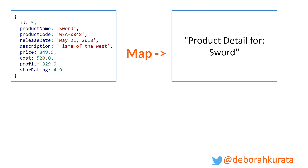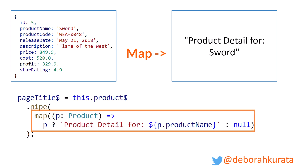One last example of how to use the map. Again, we have our product on the left that we've retrieved and we want to map it to a string for display on the top of the page. We can take our stream that contained our product and pipe it through a simple operation to convert it to a string using the ternary operator.